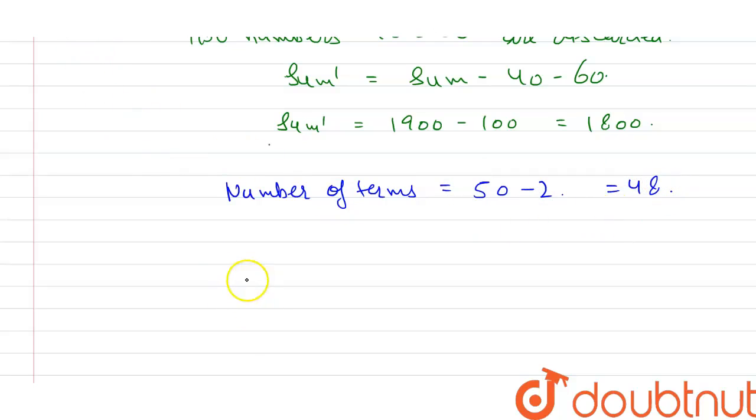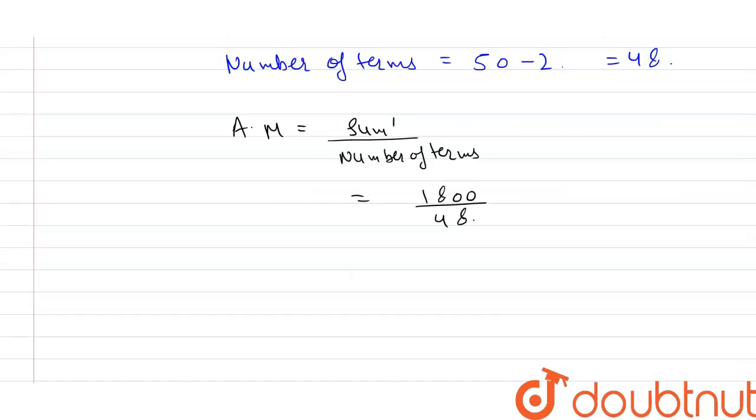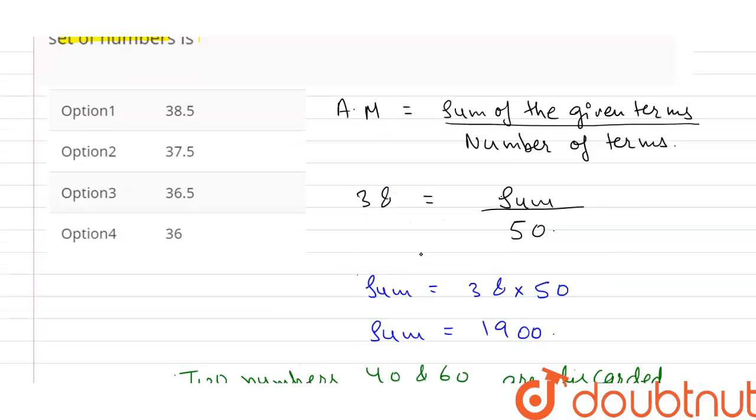So we can say the arithmetic mean is equal to sum dash divided by the new number of terms. The value of AM is equal to 37.5. 1800 divided by 48 is equal to 37.5, so the answer for this question is option number 2, which is 37.5.